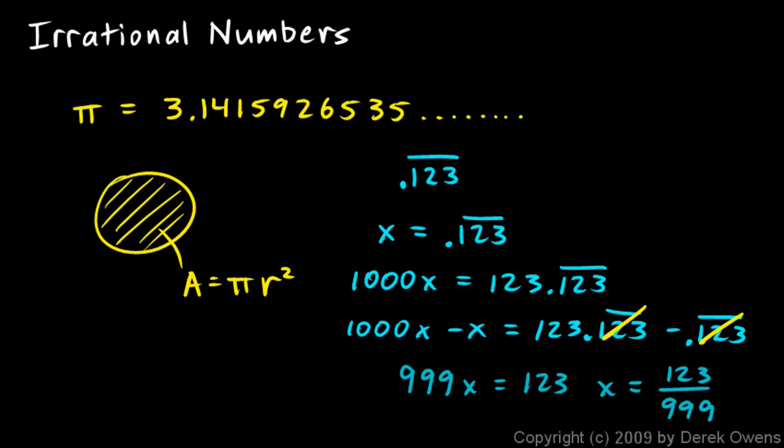And we could simplify that, but the point is we've taken this decimal and written it as a ratio, a rational number. So you think, couldn't we do that with the number pi? Well no. The reason we can do it with the number 0.123 repeating is because we see three digits repeating, so we multiply by 10 to the third, and this little algebraic maneuver works out.